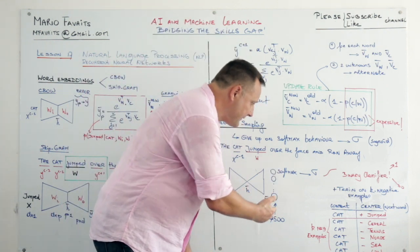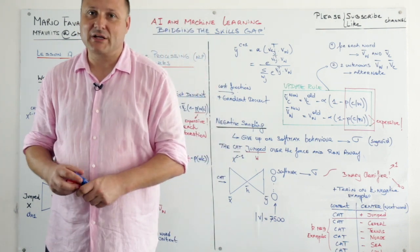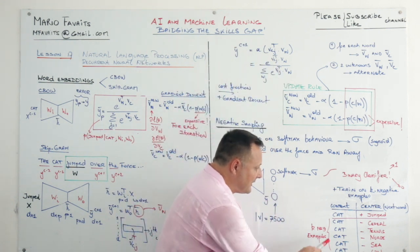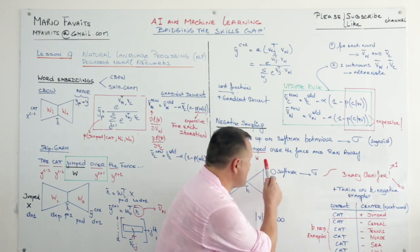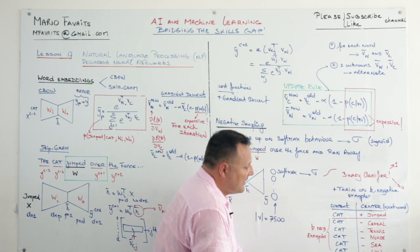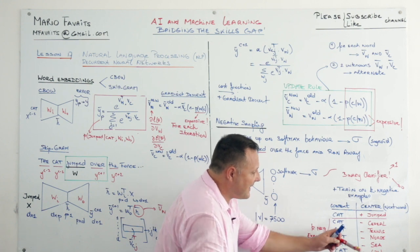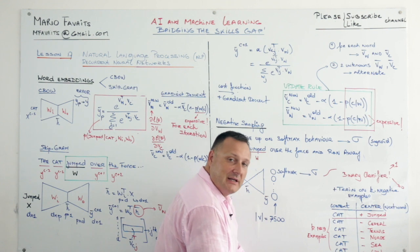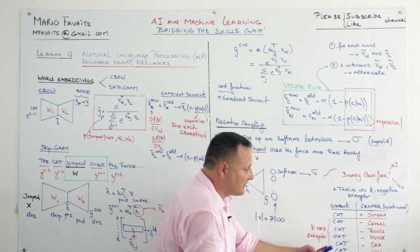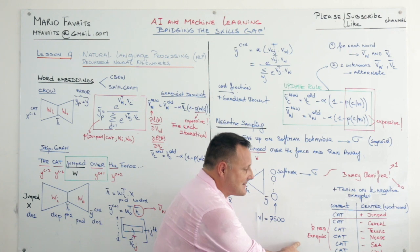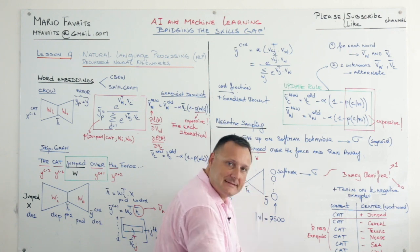So instead of doing 7500 binary classification calculations, we're going to do a lot less. And how we will do it? Well, for every positive example, cat jumped, we're going to sample k negative examples according to a certain distribution, which I will come back to a little bit later. So we have to find 5 words that are actually not really linked to the word cat. So I took 0, tennis, nurse, sea, and cat. All right. So in this case, you only have 6 sigmoid calculations to perform.